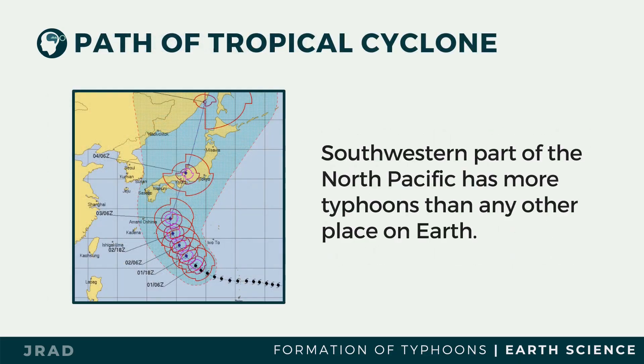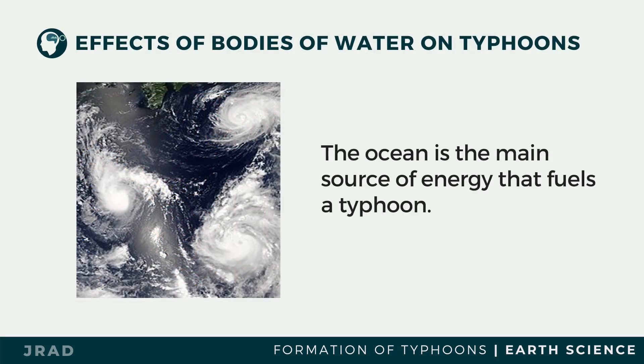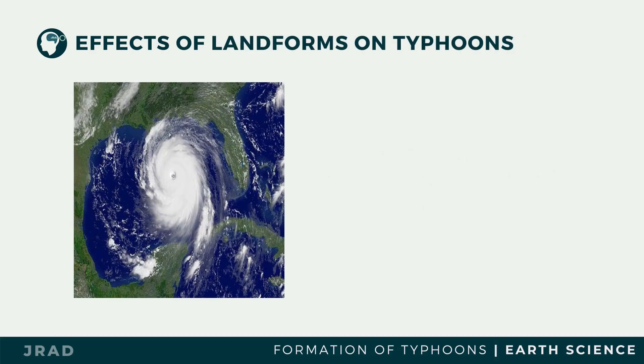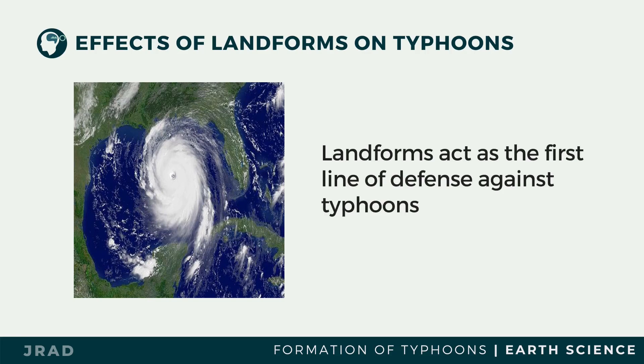History shows that the southwestern part of the North Pacific has more typhoons than any other place on Earth. In the northern hemisphere, they travel westward due to Earth's rotation. Tropical cyclones form and intensify in suitable environments. The ocean is the main source of energy that fuels the typhoon. When the typhoon makes landfall, there is not much evaporating moisture, removing its main energy source. Landforms act as the first line of defense against typhoons, and mountain ranges can weaken a typhoon through friction between the wind and the rough surface.